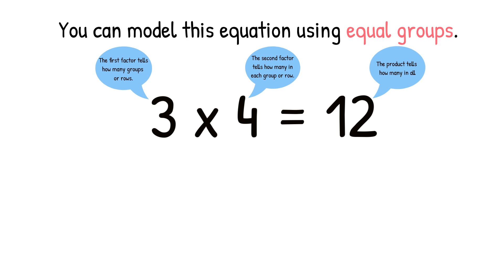You can model this equation using equal groups. And remember I said the multiplication symbol can be read as groups of. So we can read this equation as 3 groups of 4. So we are going to draw 3 big circles for the groups: 1, 2, 3. The second factor tells us how many in each group. So we are going to put 4 in each group.